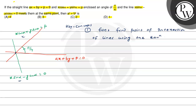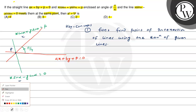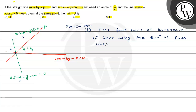Let us write the equations of the given lines. First, we work on the concept of point P — the point of intersection. We are given x·sinα minus y·cosα equals 0.